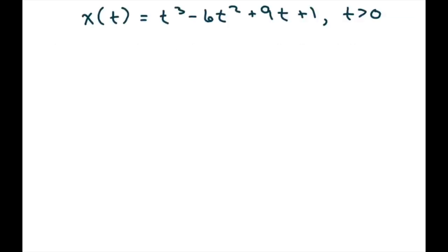So the first thing we want to do is find the velocity of t by taking the derivative of our position of the particle, which is 3t squared minus 12t plus 9.